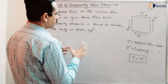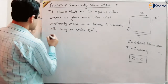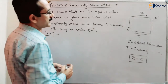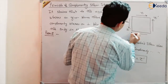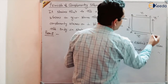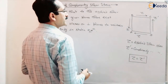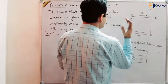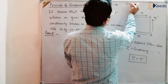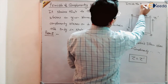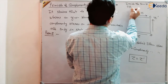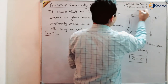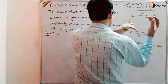We want to prove the principle of complementary shear stress. Let us try to prove it. Label the block: this is A, this is B, C, and D. The thickness of this block inside the board is supposed to be unity — so inside the board, the thickness is suppose unity, or one meter. This is a three-dimensional block and it has unit dimensions inside it.